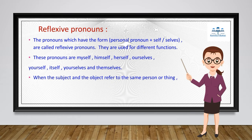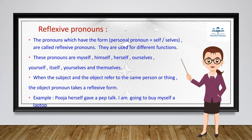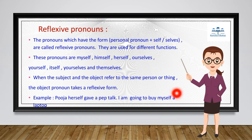When the subject and the object refer to the same person or thing, the object pronoun takes a reflexive form. For example: 'Pooja herself gave a pep talk.' 'I am going to buy myself a laptop.' In these sentences, 'herself' and 'myself' are reflexive pronouns.